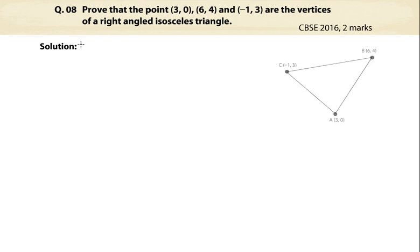Let's solve the given problem. It is given that point A coordinates are (3, 0), B coordinates are (6, 4), and C coordinates are (-1, 3). Now, we'll use the distance formula as shown.